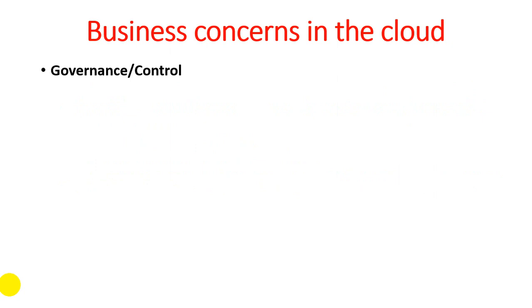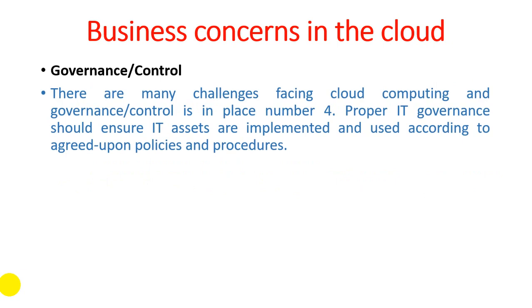Next is governance and control. It is also an important issue in this discussion. There are many challenges facing cloud computing, and governance or control is at number four. Proper IT governance should ensure that IT assets are implemented and used according to agreed-upon policies and procedures. The security issue we discussed earlier is one part of governance and control — if some unauthorized users can read personal data available on the cloud, what different kinds of governance are provided in the IT Act 2000 in the concept of cyber security?